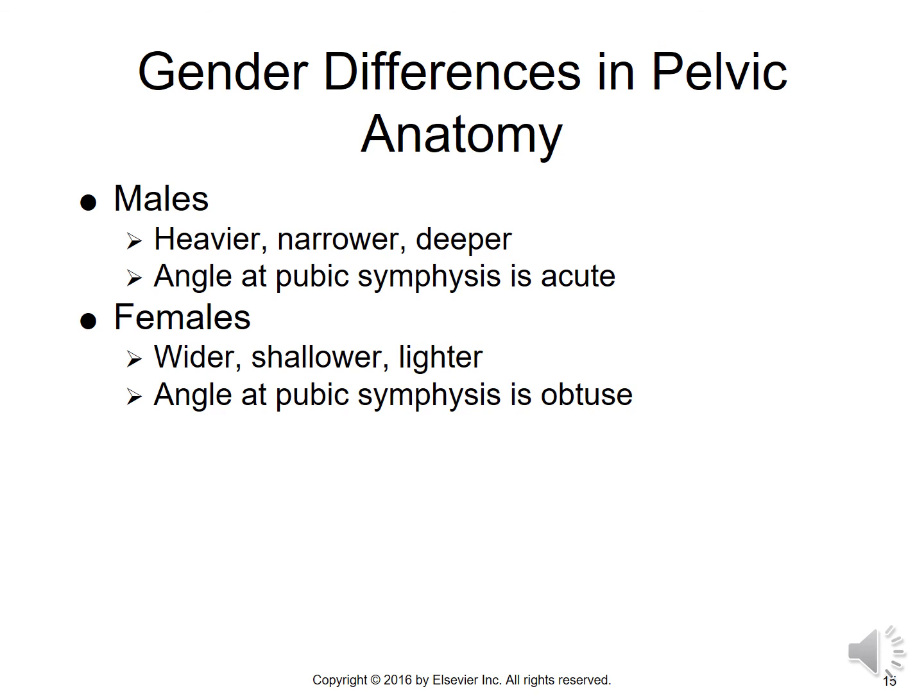There are some gender differences in pelvic anatomy. For males, the pelvis is heavier, narrower, and deeper, and the angle at the pubic symphysis is an acute angle — that pubic arch is less than 90 degrees. Whereas in females, the pelvis is wider, shallower, and lighter, and the angle at the pubic symphysis is an obtuse angle, greater than 90 degrees.